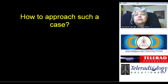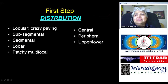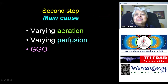So how do you approach such a case? The first step is to determine the distribution. Is this truly lobular as the Fleischner Society intended with the crazy paving appearance? Is it sub-segmental, segmental, lobar, or patchy multifocal? Is it peripheral or central? Or is it upper lobe or lower lobe predominant? The second step is to determine the main cause — is it varying aeration, varying perfusion, or predominantly ground glass opacification?